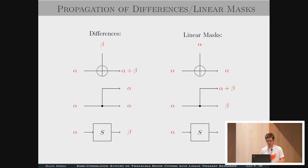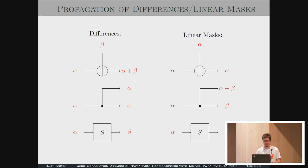For linear masks, it's slightly different. Over an XOR, the masks are the same. Over a branching point, they sum up. And over an S-box, we can compute the linear distribution table.